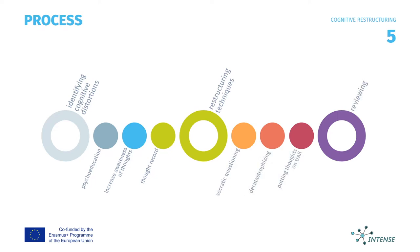The process of cognitive restructuring may be described in three categories. Identifying irrational thoughts or cognitive distortions involves three steps: first, psychoeducation; second, increased awareness of thoughts; third, thought records. We would like to focus on three cognitive restructuring techniques.